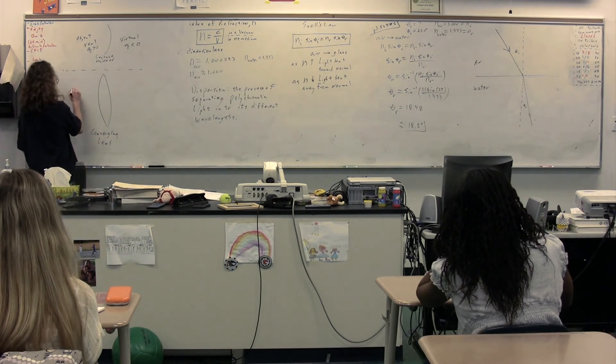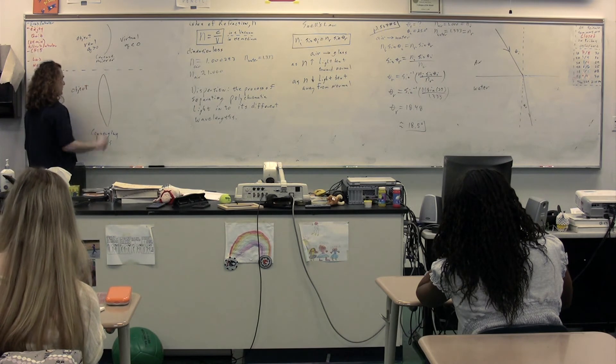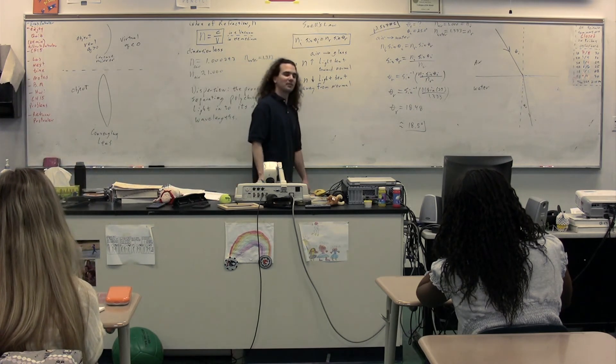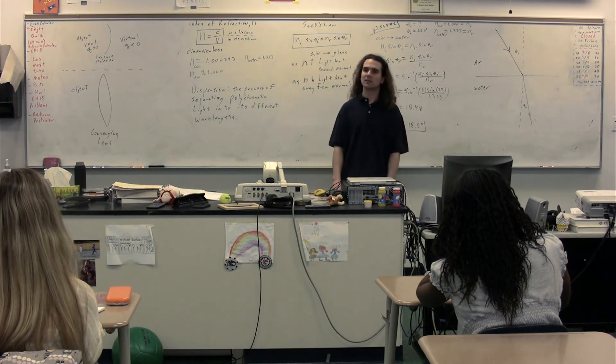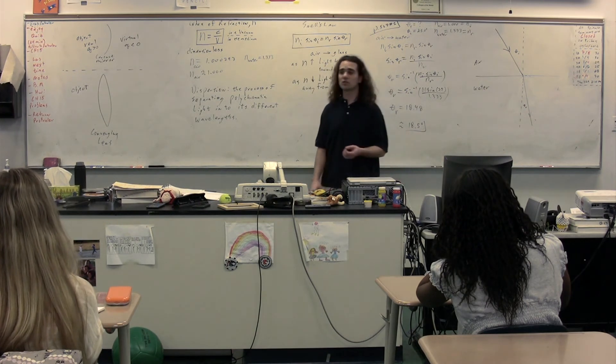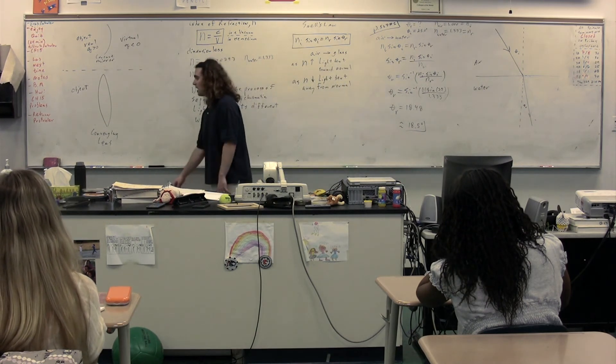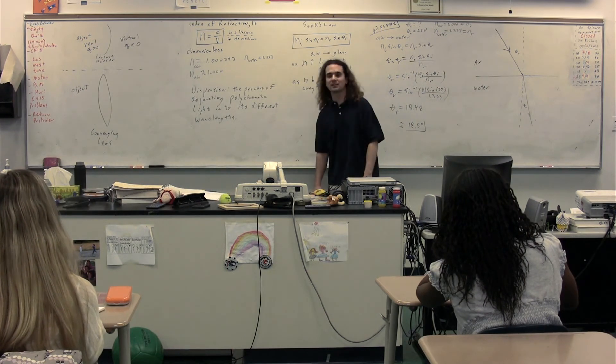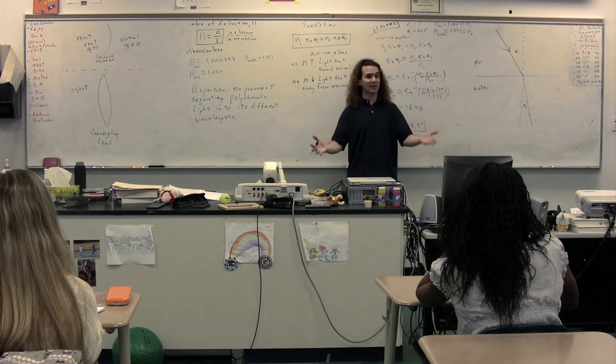Now, if the object is over here, class, does light go through or bounce off of the lens? It goes through. It goes through. So, the real side for a lens is going to, in this case, be on the left or right hand side of the lens? The right hand side.